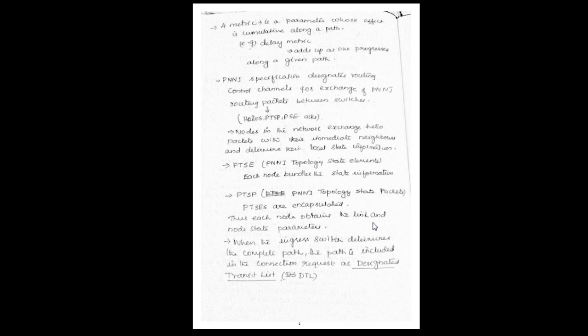When a node determines the complete path, the path is included in the connection request as a DTL (Designated Transit List). It specifies the path, and when sending a connection request, the path specifications are also sent along with the request — that is called DTL.